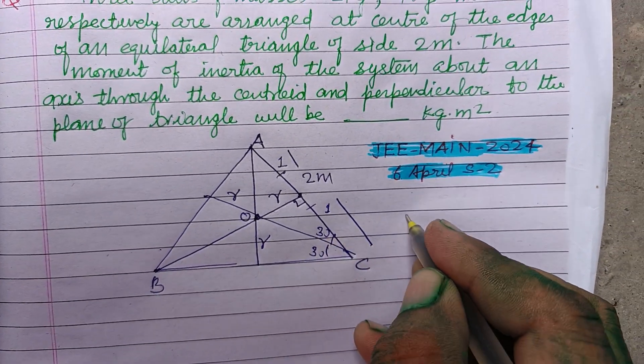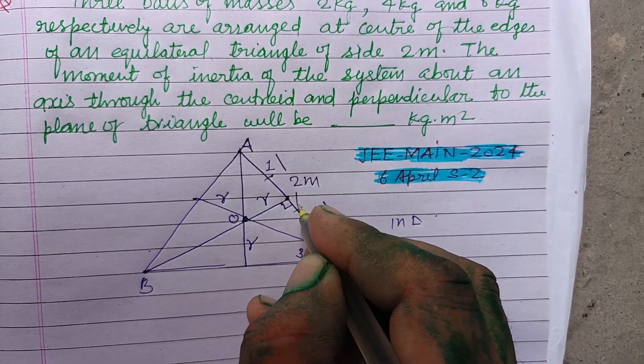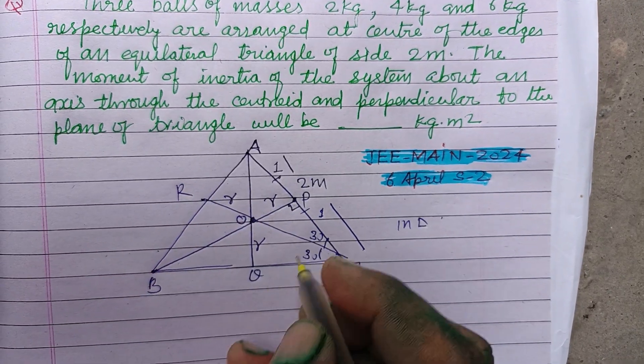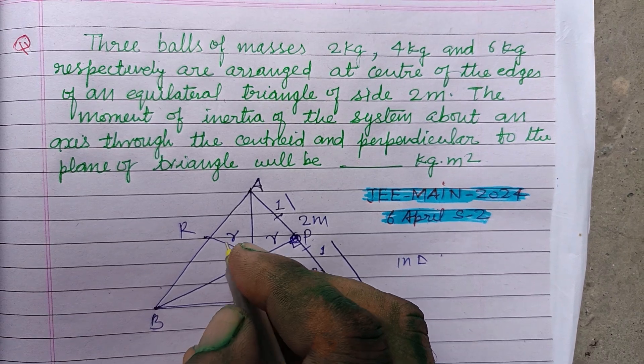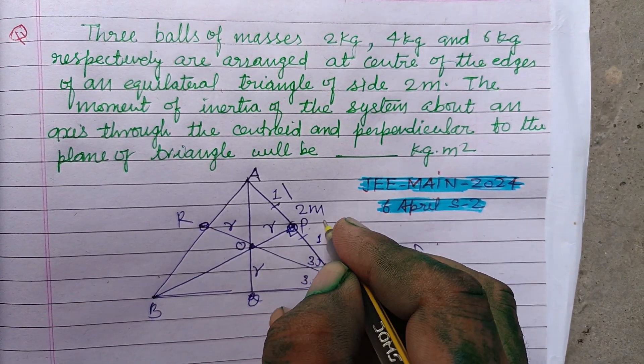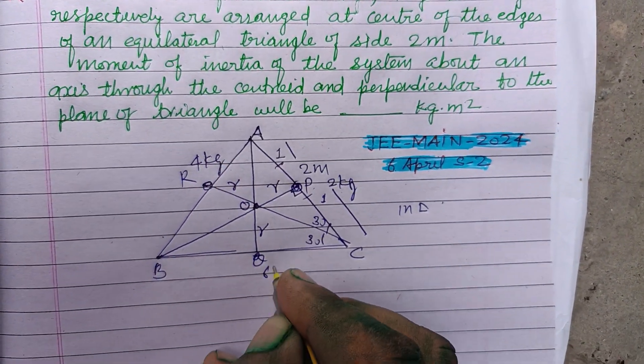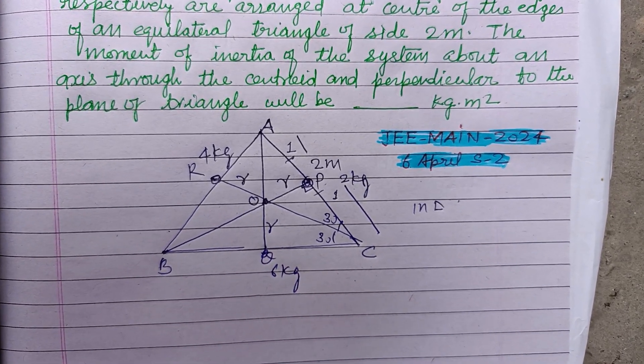Now, in right angle triangle O, let this is P, this is Q, this is R. And masses, balls of masses 2 kg, 4 kg and 6 kg are placed at the midpoint of these sides.